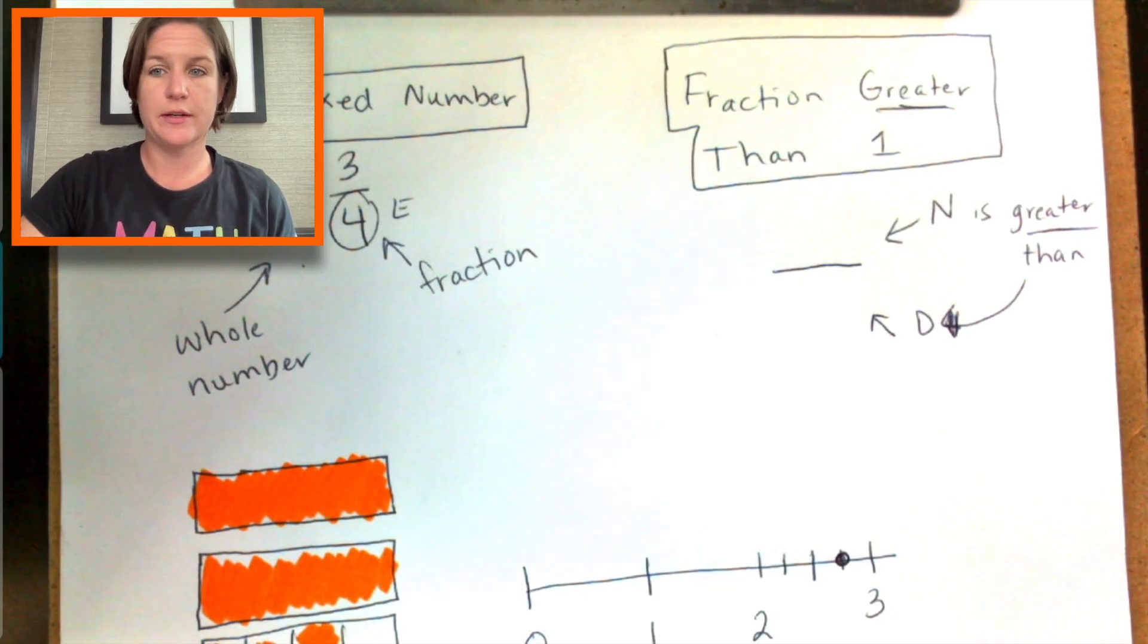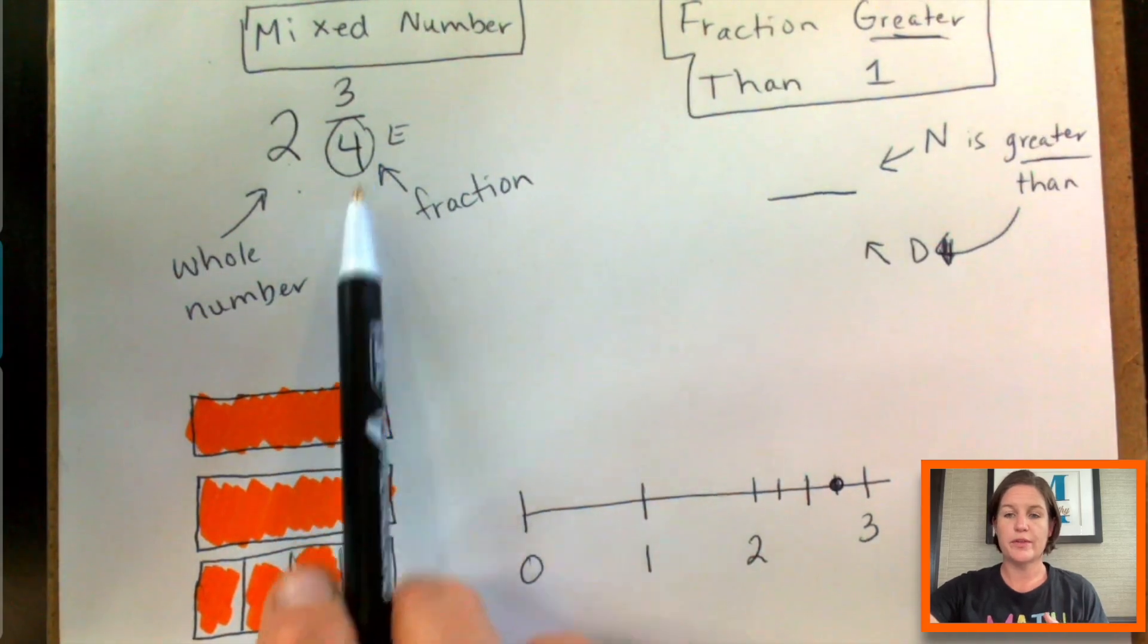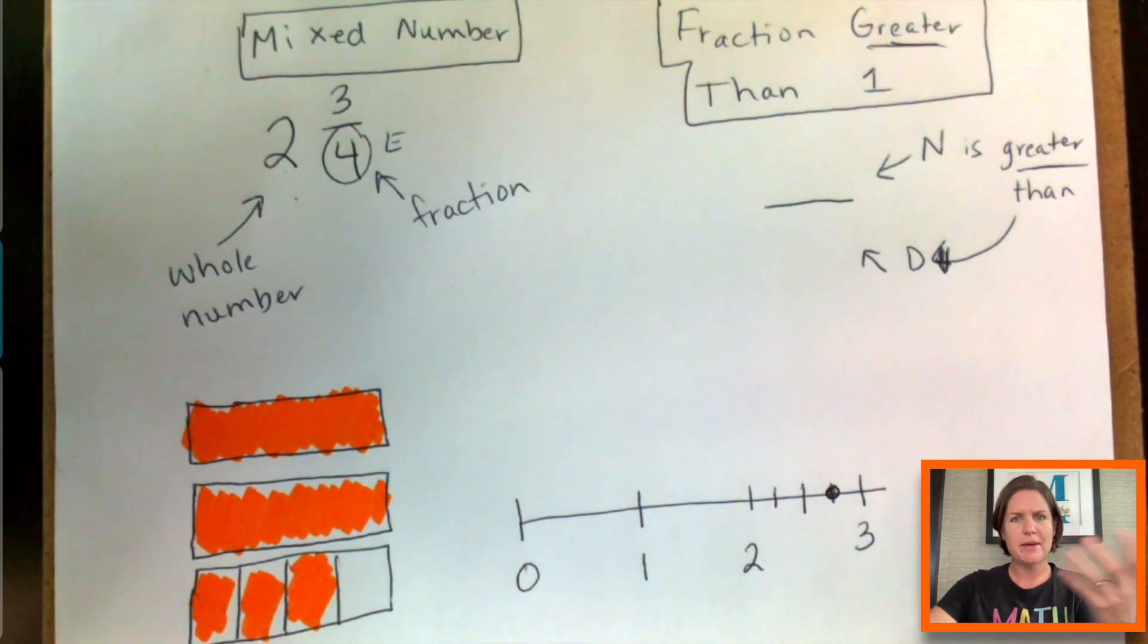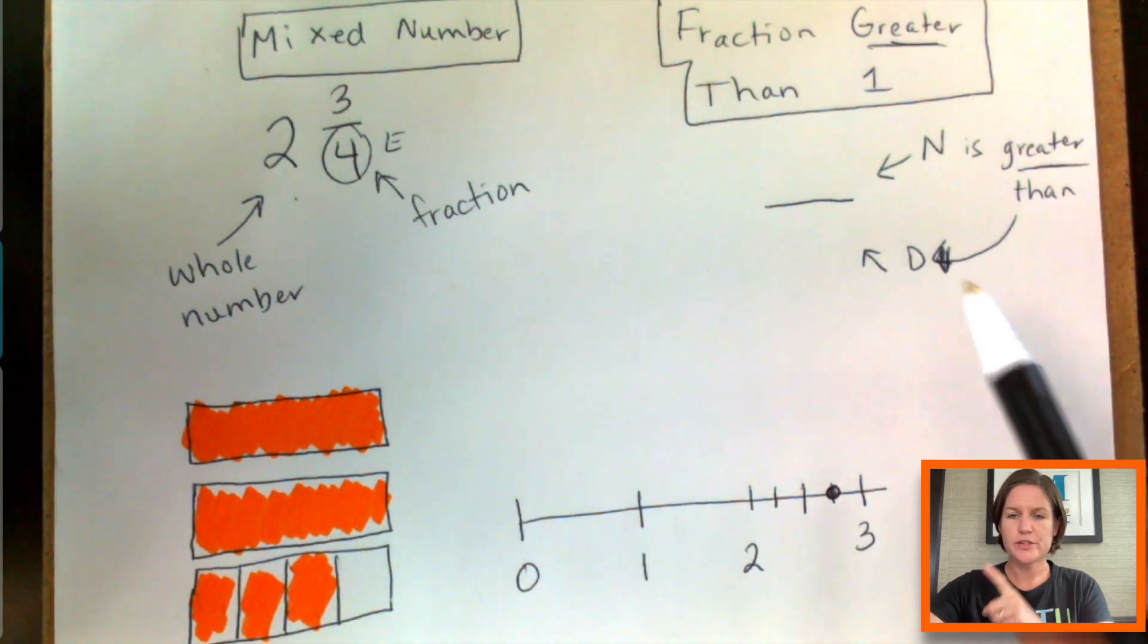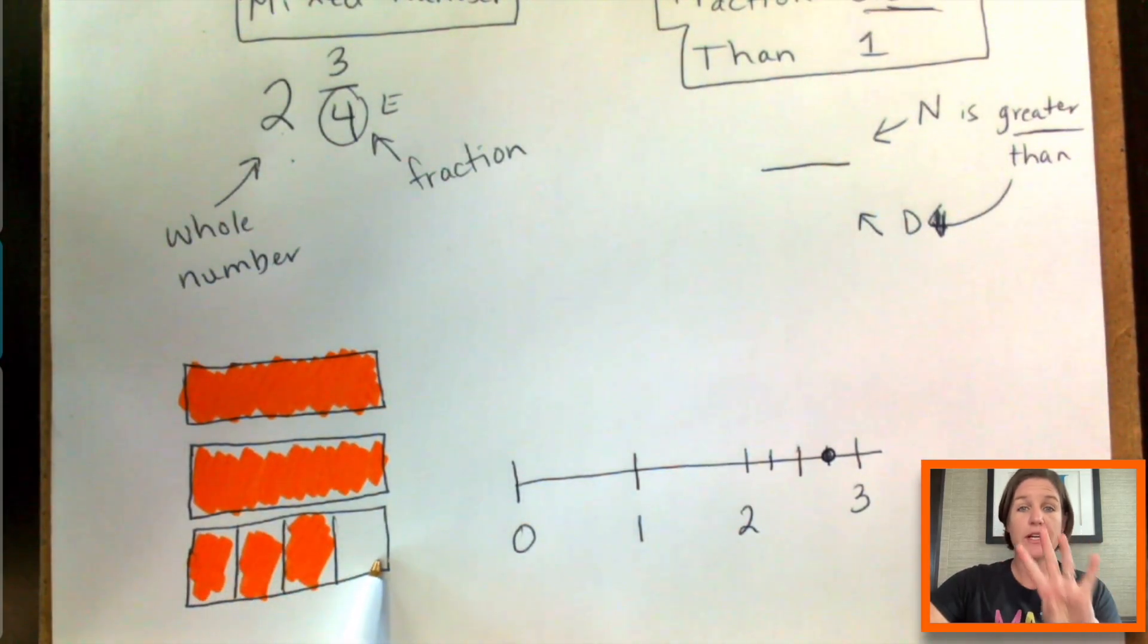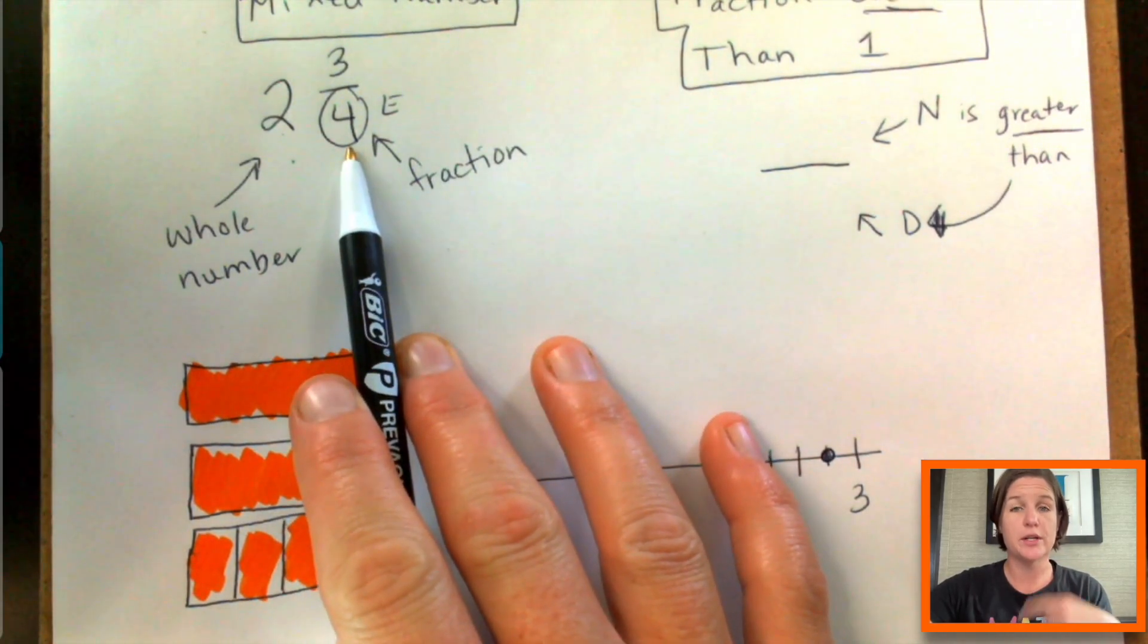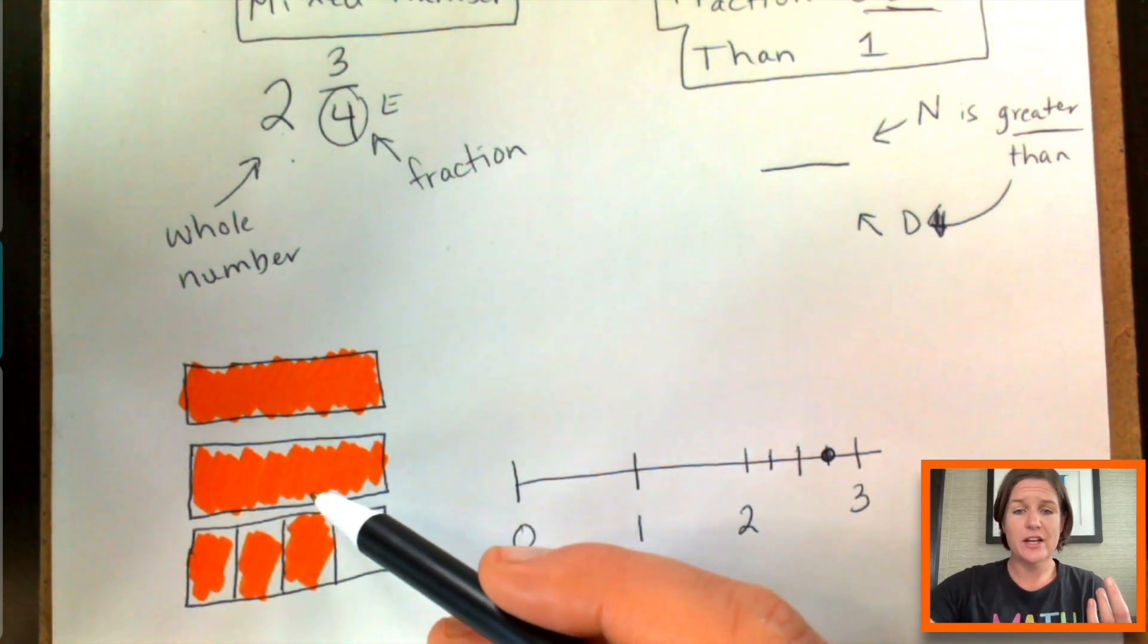Okay, so how could we change two and three fourths into a fraction greater than one? Let's have it make sense by using a visual. So let's go back over here. Here we had our equal parts broken into four equal parts, right? That's our denominator, the total number of equal parts is our denominator.